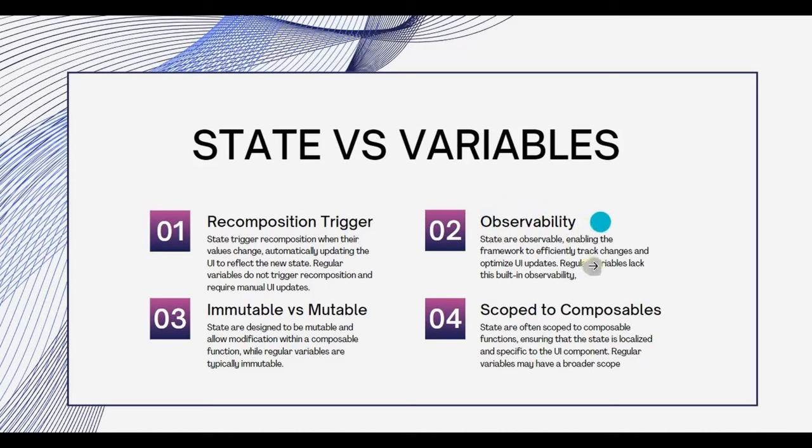Second, observability. States are observable, enabling the framework to efficiently track changes while variables lack observability. Third, immutable versus mutable. States are always mutable which allows modification while variables are typically immutable. Fourth, scope to composables. States are often scoped to composable, ensuring that the state is localized and specific to the UI component while variables may have a broader scope.